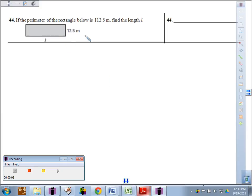In number 44, we're told the perimeter of this rectangle is 112 and a half meters, and we're supposed to find the length. So we're working backwards now.